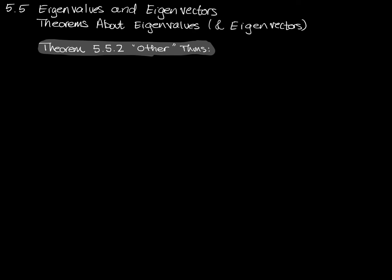So let's just write them down, have a quick look at what they're saying, and then we'll just use them going forward — we won't actually take the time to prove them. We start again with the statement: let A be an n by n matrix. The five statements I'm about to discuss all rely on the fact that A is an n by n square matrix.